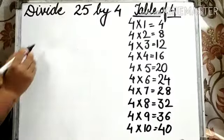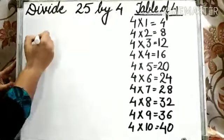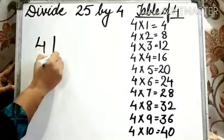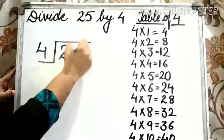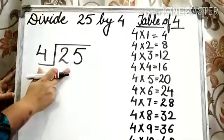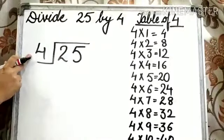For example, divide 25 by 4. Here 25 is the dividend and 4 is the divisor.